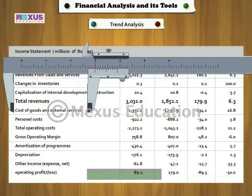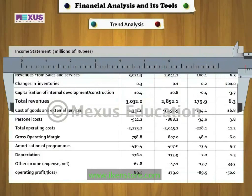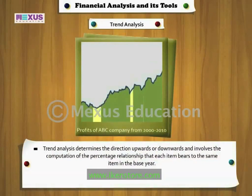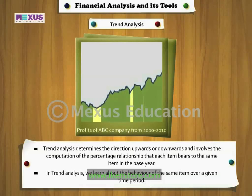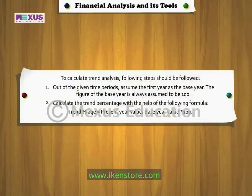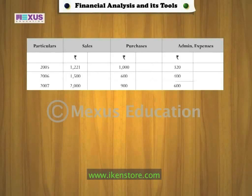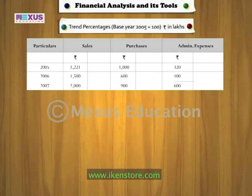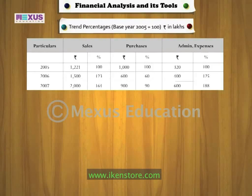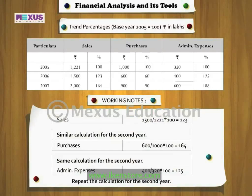Trend analysis: Financial information can be examined by calculating the drifts in a series of information. Trend analysis determines the direction — upwards or downwards — and involves computation of the percentage relationship that each item bears to the same item in the base year. In trend analysis, we learn about the behavior of the same item over a given time period. The following example clearly states the method of calculating trend percentage, considering sales, purchases, and administrative expenses of a company for 3 years.